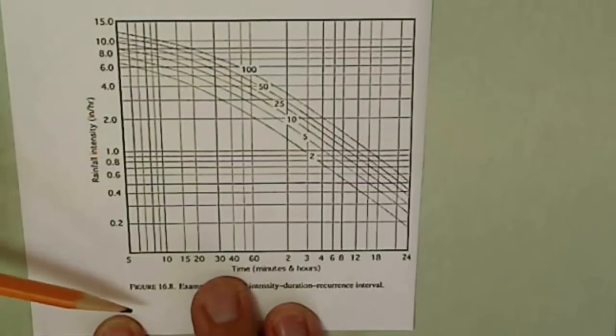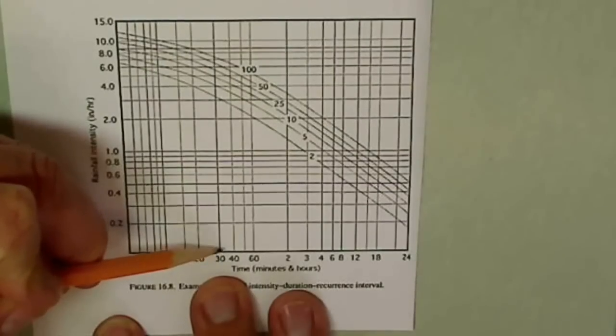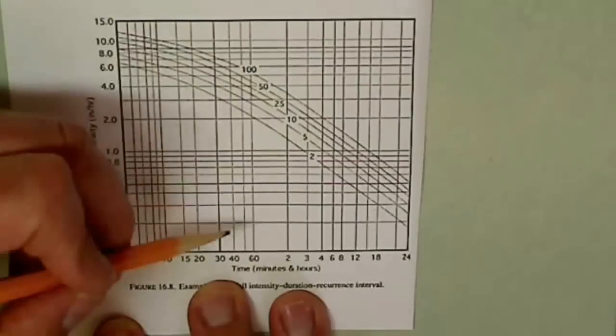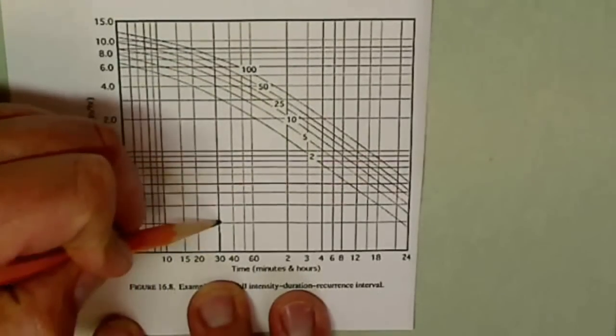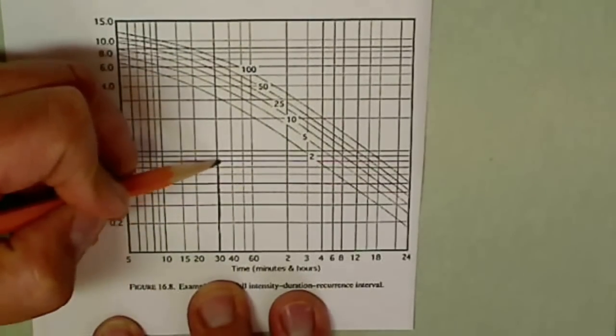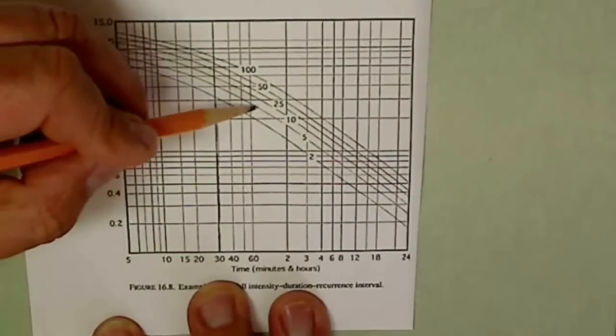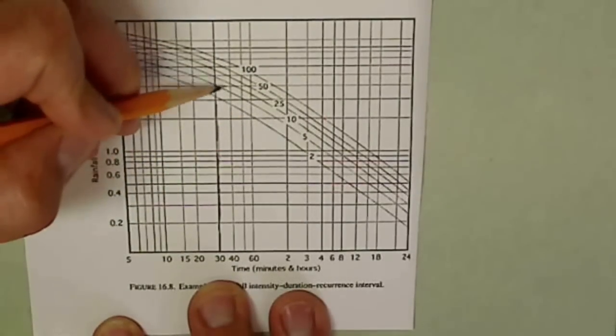So if we were to have a storm right here, the time would be 30 minutes. And let's say that this was a 10-year storm. We would follow this line up until we hit the 10-year curve. And you see we've got 2, 5, and we've got the 10-year curve right here.